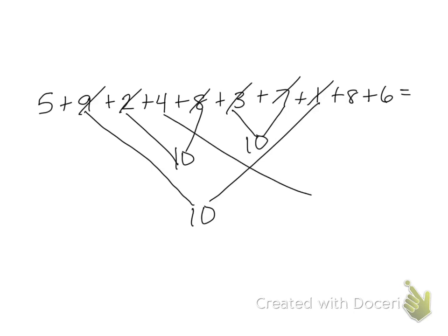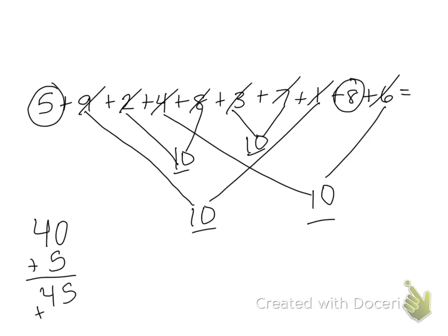And then four plus six is ten. So I'm going to double check, make sure I don't have any other tens. I don't. So I'm left with an eight and a five. So let's add our tens first. So we have ten, twenty, thirty, forty. So then we have forty plus five is forty-five. And then forty-five plus eight is fifty-three. So my final answer is fifty-three.